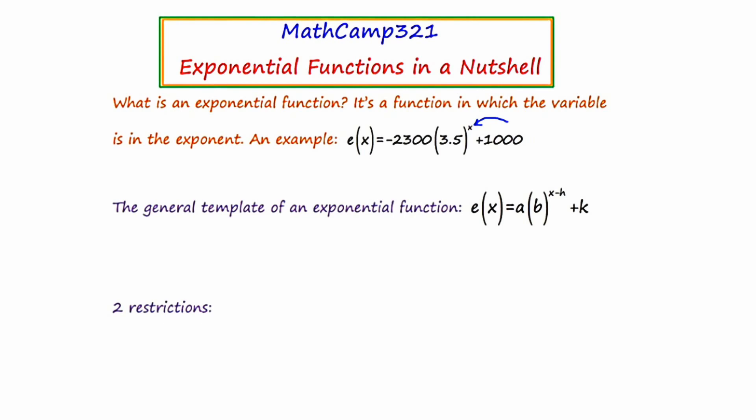The general template of an exponential function is as follows: f(x) equals a times b to the x minus h, plus k. Virtually all exponential functions will subscribe to this template more or less. I'd like you to note that x is in the position of the exponent, but something else to focus on is the base b. The base b is very important because it reveals whether the graph is going to exhibit exponential growth or exponential decay.